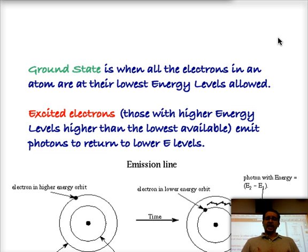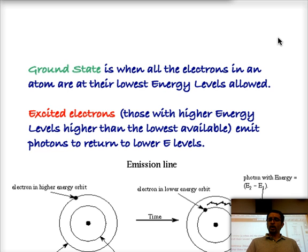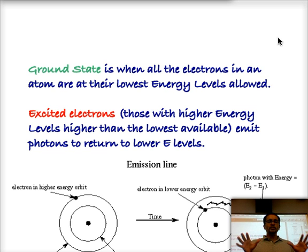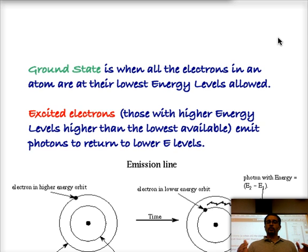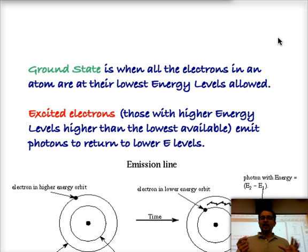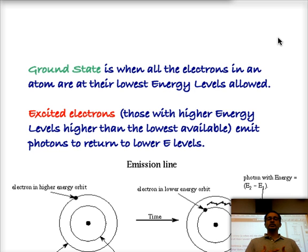If all the electrons in an atom are at the lowest energy possible — and that doesn't mean they are all in energy level 1, because there is a limit to how many electrons can be in energy level 1 — but if all the energy levels have been filled at the lowest possible energy, we call that the ground state. Ground state is the natural state of most atoms; it's where they don't have any extra energy. Excited electrons are those that are at higher energy levels than the ground state, and excited electrons are the ones that emit light in order to return to lower energy levels.